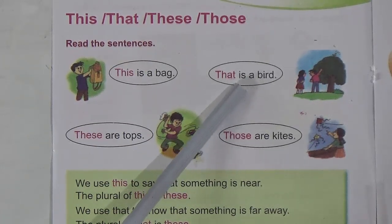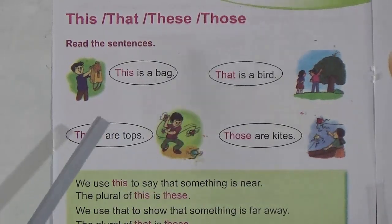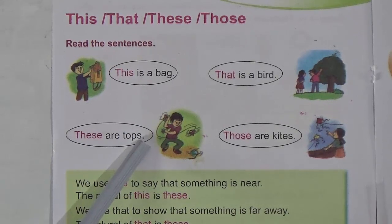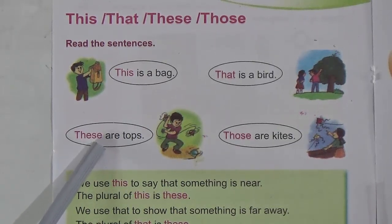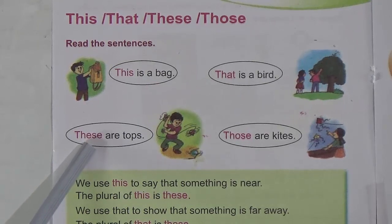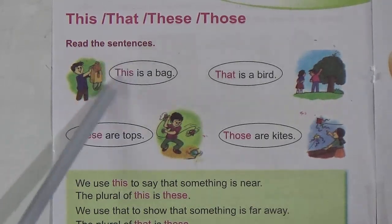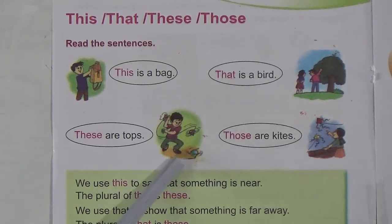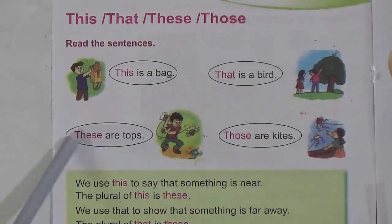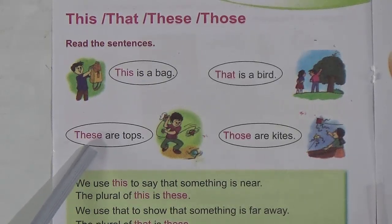Now look — 'these are tops'. We use 'these' when we are talking about plural things. 'These' is the plural of 'this'. There are two tops and these tops are near the boy, so we use 'these are tops'. We use 'these' when we are talking about more than one person, one animal, one bird, or one object.